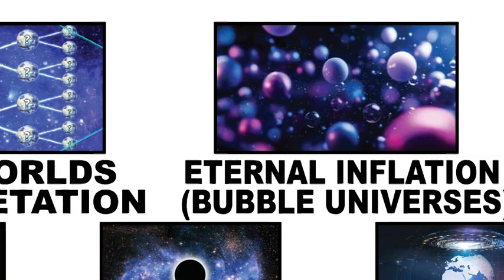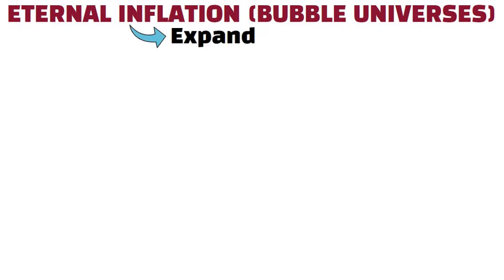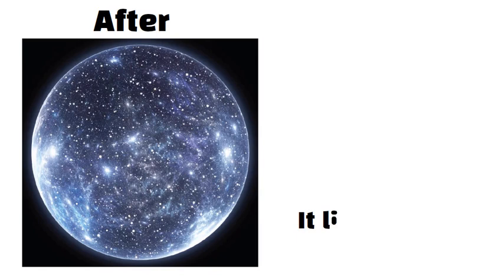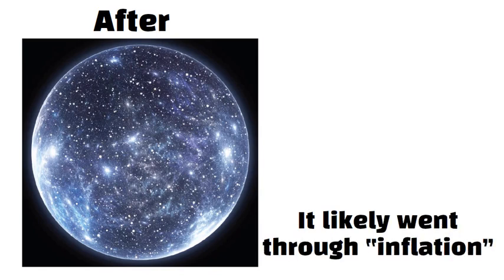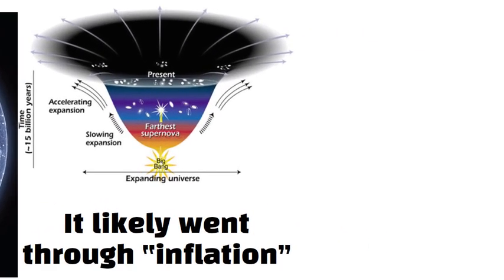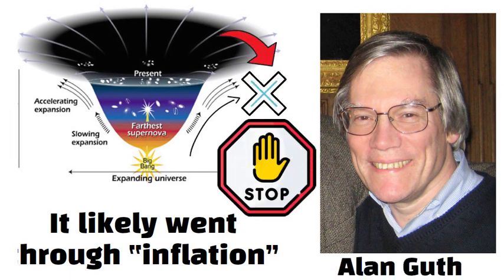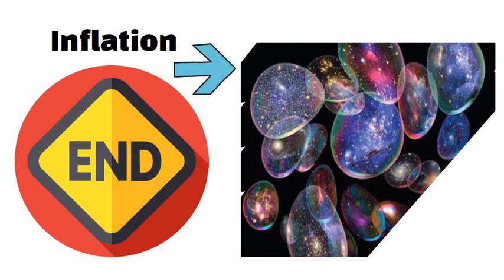Eternal Inflation. Eternal Inflation expands on the classic Big Bang Theory. Right after our universe began, it likely went through inflation, a super fast expansion. According to physicists like Alan Guth, this inflation might not have stopped everywhere at once. In some regions, inflation ends, forming bubble universes.